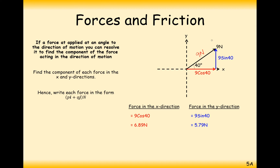At 45 degrees, the horizontal and vertical components would be equal. But at 40 degrees, we expect more force going to the right. To write this answer in vector form: 6.89i + 5.79j newtons.